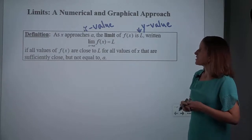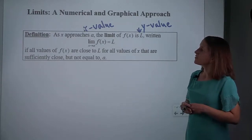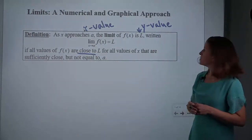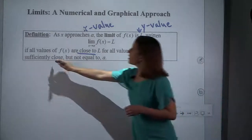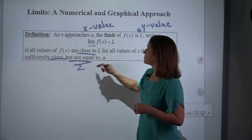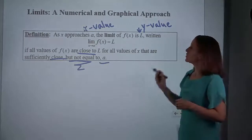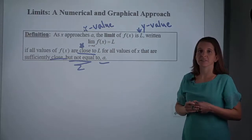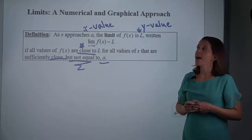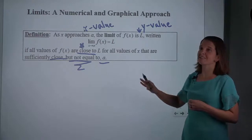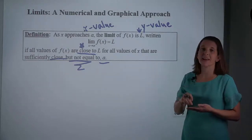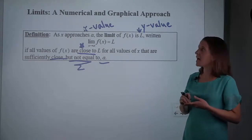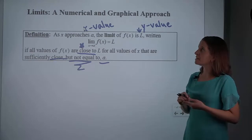So as X approaches A, the limit of f of X is L, if all values of f of X are close to L for all values of X that are close to but not equal to A. These words 'close' are incredibly important because what you already did in pre-calculus was function values, and this is different. This is not talking about when X equals A; this is talking about when X is close to A.